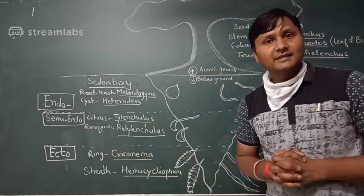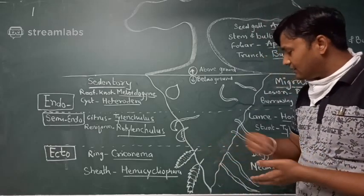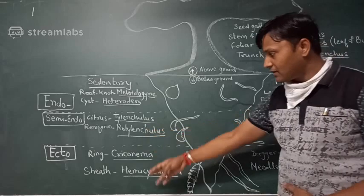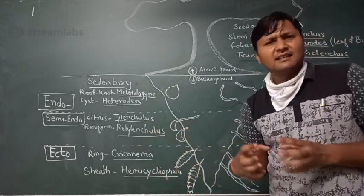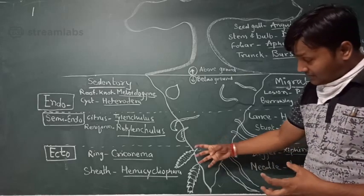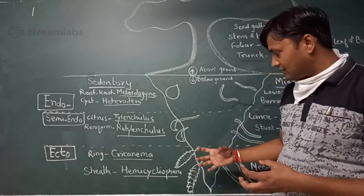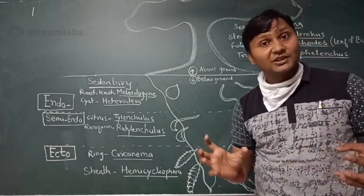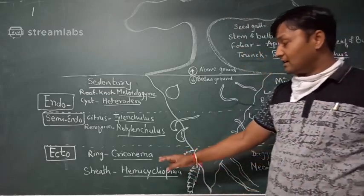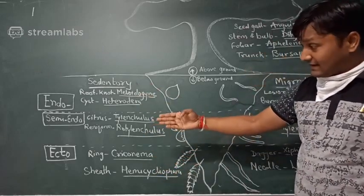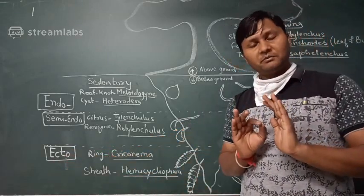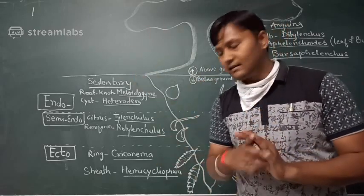Ectoparasitic nematodes have only the stylet and mouth parts entering the plant system; the body stays outside. Under sedentary ectoparasitic nematodes, examples include ring nematodes (Criconema) and sheath nematodes (Hemicycliophora). These are very sluggish due to their cuticular markings and scale-like formations. However, they have very long stylets, allowing them to feed from different cells while remaining in one place.